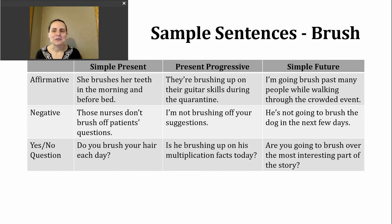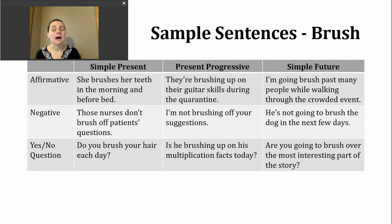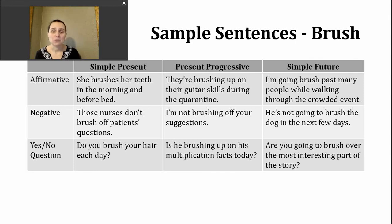Finally, let's look at the simple future. To make the simple future, we have a couple of different ways. Today, let's focus on using 'be going to' and our base verb, with 'be' in the present form — am, is, or are. Affirmative example: I'm going to brush past many people while walking through the crowded event. Negative: he's not going to brush the dog in the next few days. For a question, we move our 'be' verb to the front. Example: are you going to brush over the most interesting part of the story?